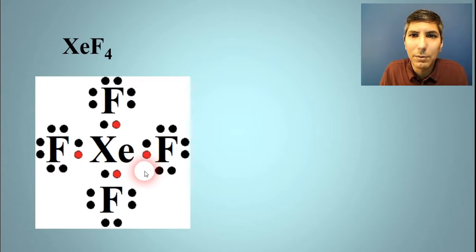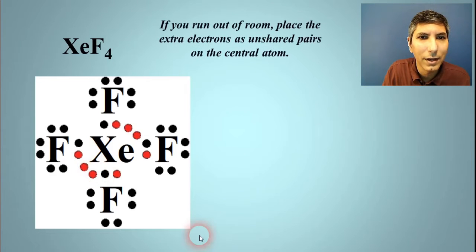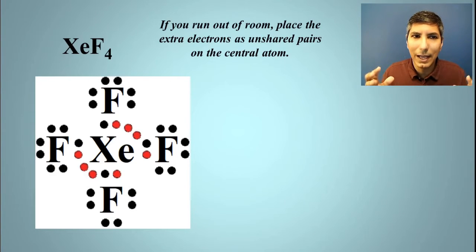You might see that we have a problem here. Because we have run out of room, we've only put four of xenon's eight dots up here. We have to put up five, six, seven, and eight somewhere. Here's what you do if you run out of room: just put the extra electrons as unshared pairs on the central atom. That's something we'll see quite often whenever there's an expanded octet.